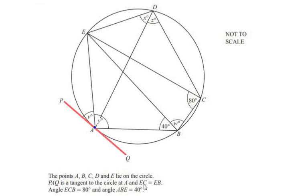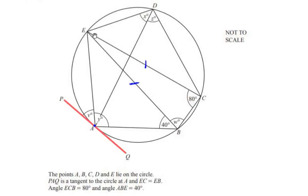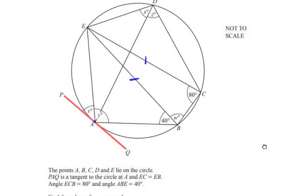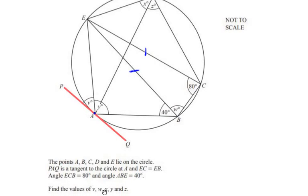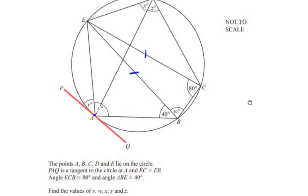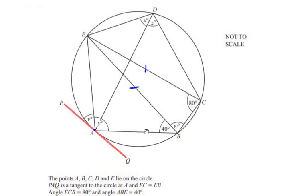They have given that EC is equal to EB, so this side EC is equal to this side EB. And angle ECB is 80 degrees. And angle ABE is given as 40 degrees. They want us to find out the values of V, W, X, Y and Z — all the missing angles in the given diagram.